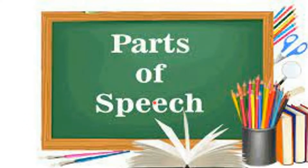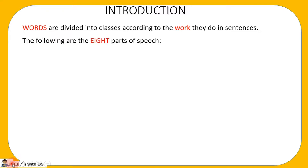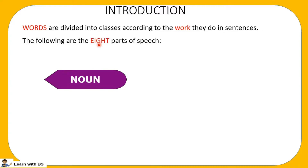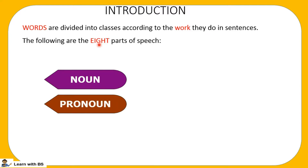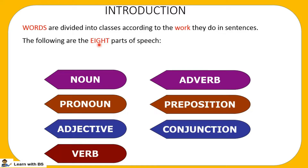Hello students. In today's video we'll be learning basic English grammar topic: parts of speech. Now, whenever you get a sentence, sentences are made up of several words. Those words are divided into classes according to the work they do in a sentence. There are eight parts of speech: noun, pronoun, adjective, verb, adverb, preposition, conjunction, interjection.